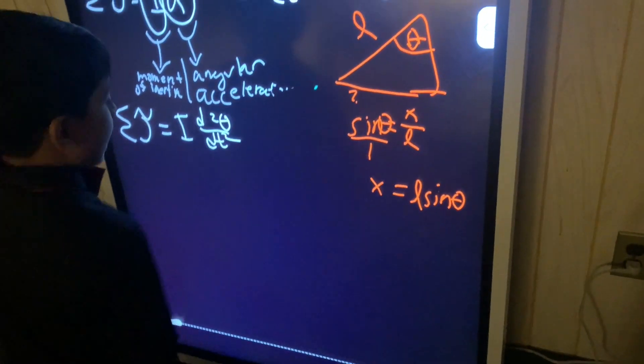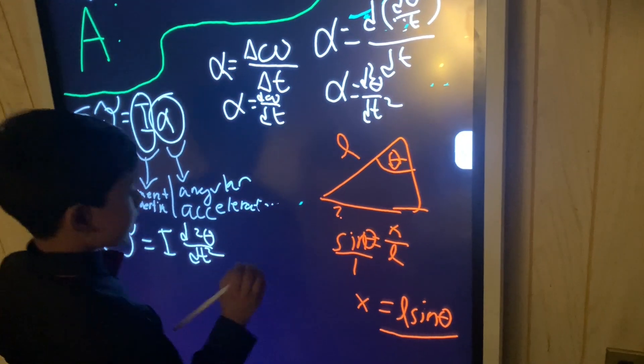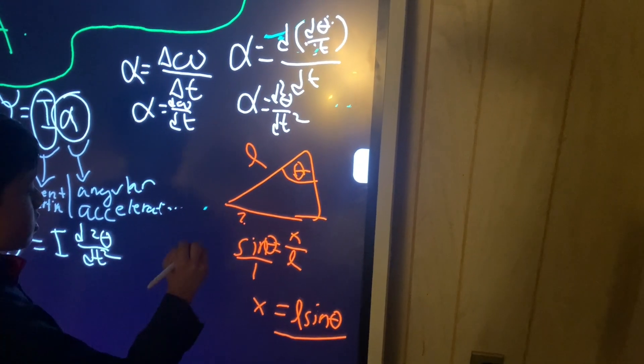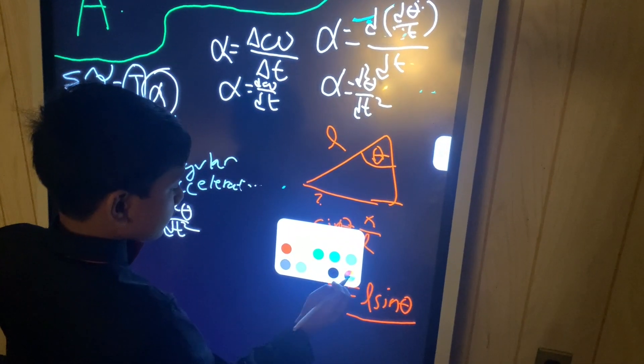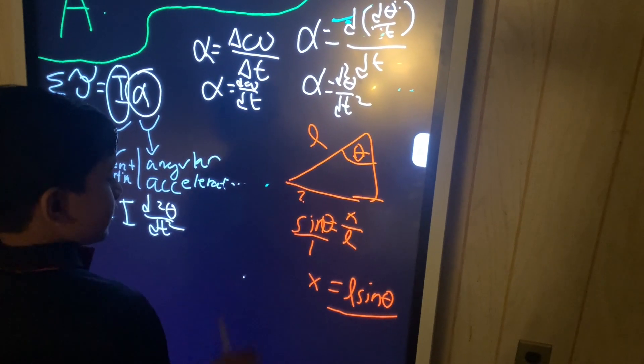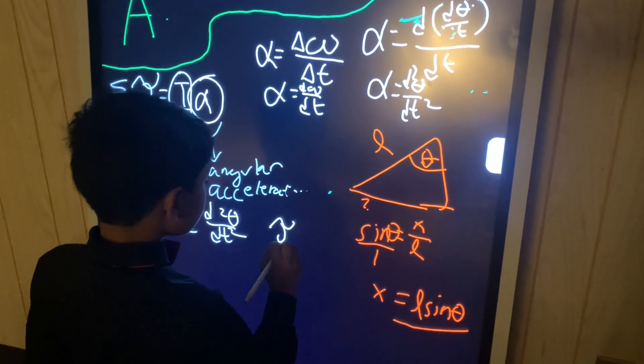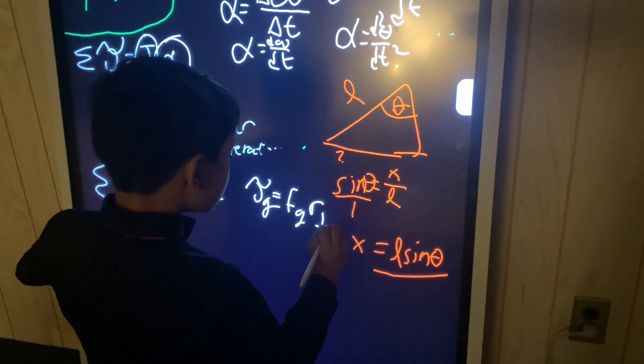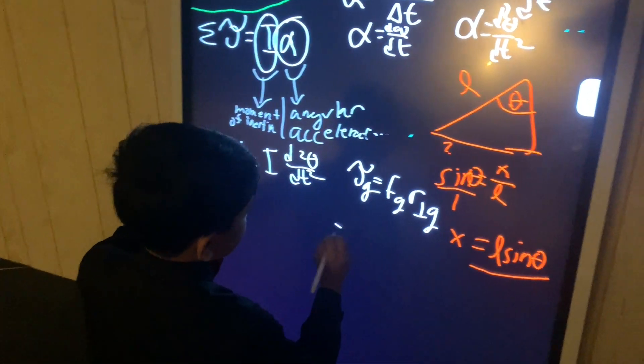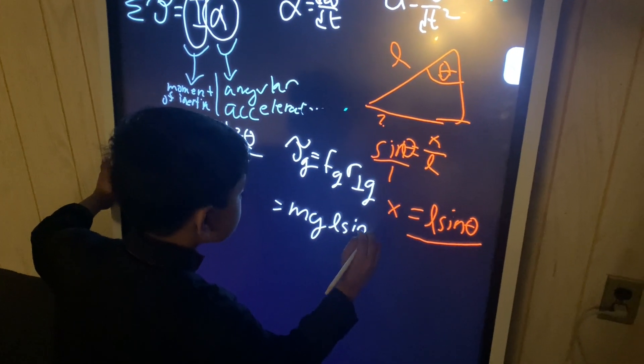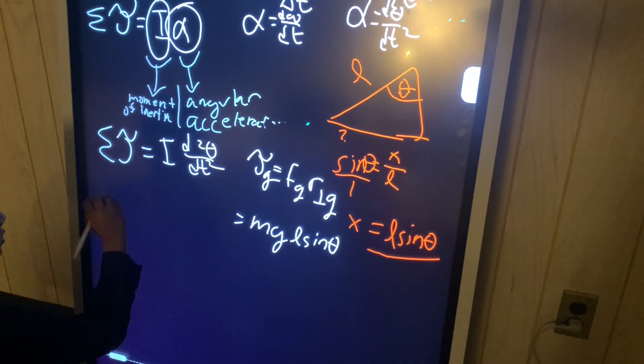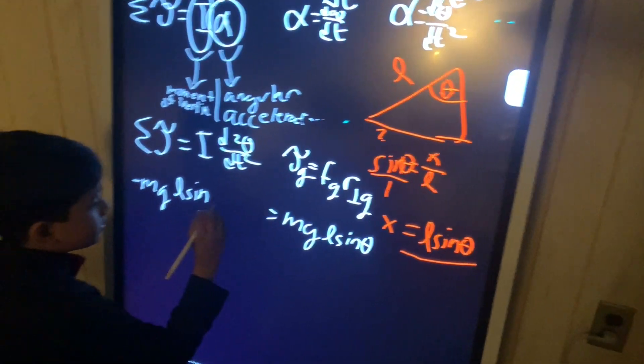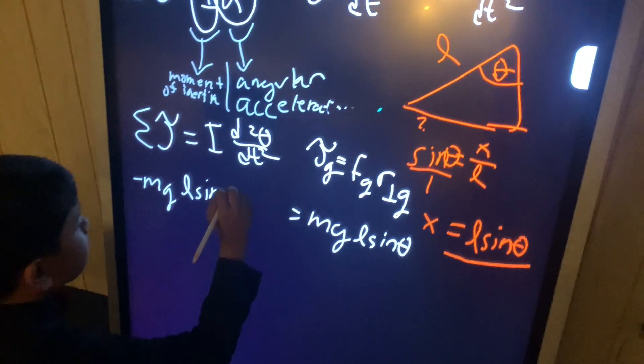So, now that means that we found a perpendicular distance. Now, why did we need that, you may ask? Well, that's because we're going to need that because torque. The torque of gravity is going to be the force exerted by gravity times the perpendicular distance the gravity goes. And that's going to be mg times what we just found.